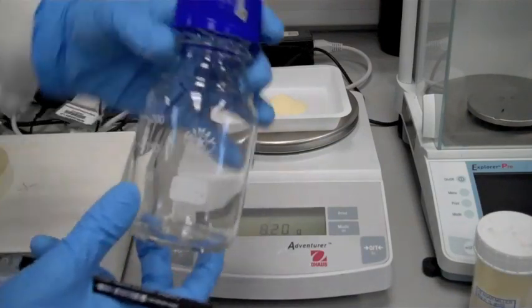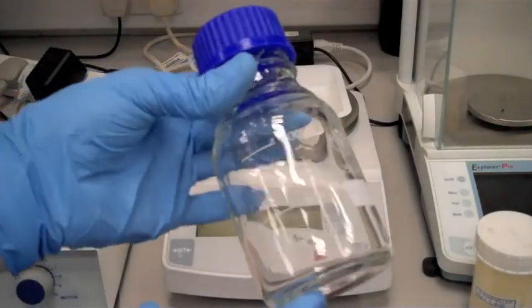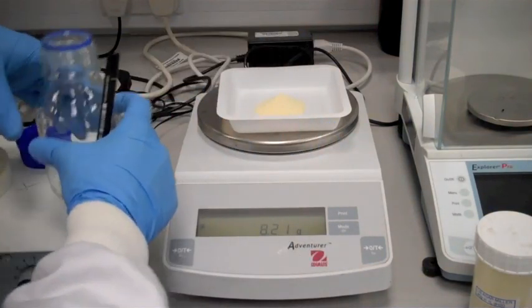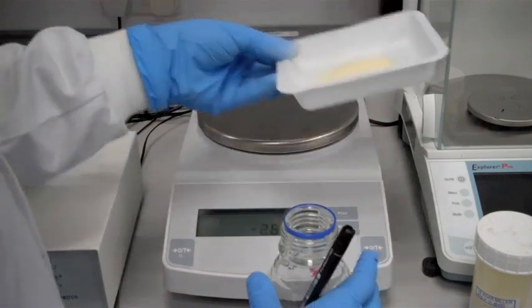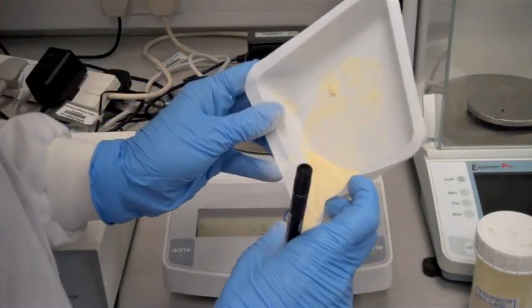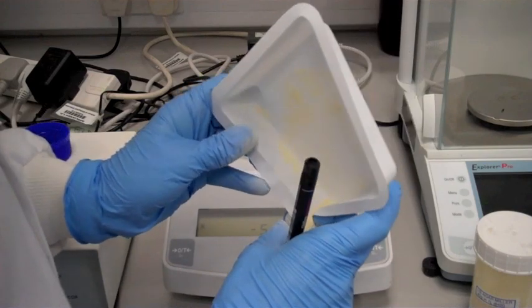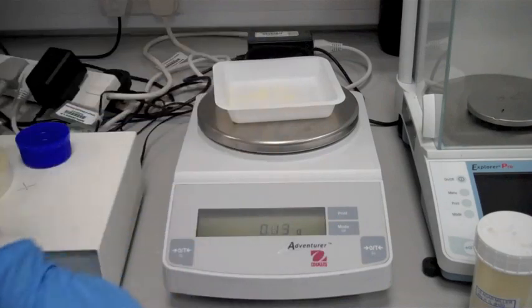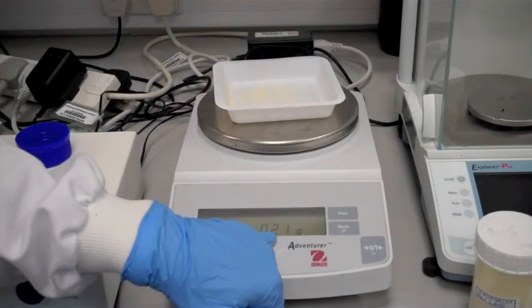Then take the bottle that you've been given, which will be for making your media in. Take the top off and simply transfer into the bottle. You'll notice that a little bit has been stuck still in there. If you actually put that down, you can actually see that that's 0.2 grams.